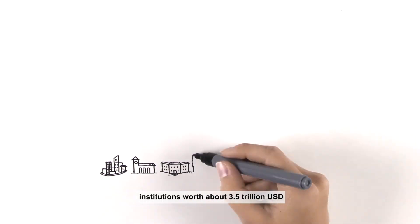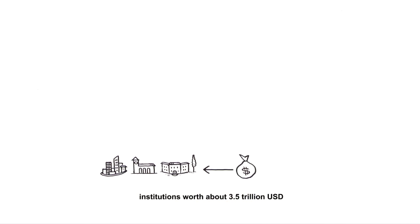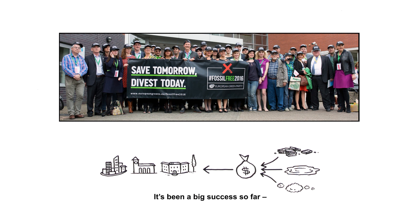Globally, institutions worth about 3.5 trillion US dollars have pulled their money out of coal, oil and natural gas. It's been a big success so far and you can help make it even bigger.